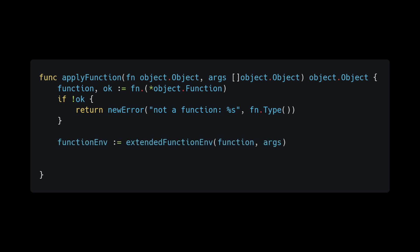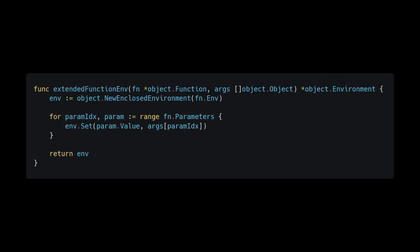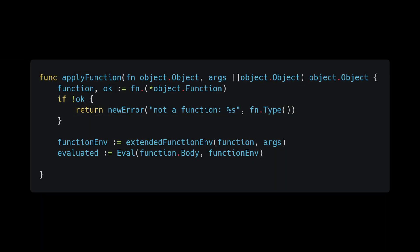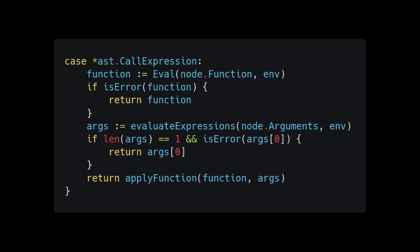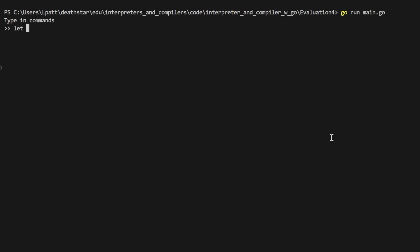Create the new nested environment with a call to extend_function_environment, passing in the function and arguments. In that method, create a new child environment as a sandbox, then for each parameter set the environment using the parameter name and corresponding argument, then return the environment. After this, call eval on the function body with the new environment, and finally return the result from a helper method called unwrap_return_value. This simply unpacks the result by casting the evaluated result to a return object and returning its value. With that, we can now use functions in our language — go ahead and give it a test drive.